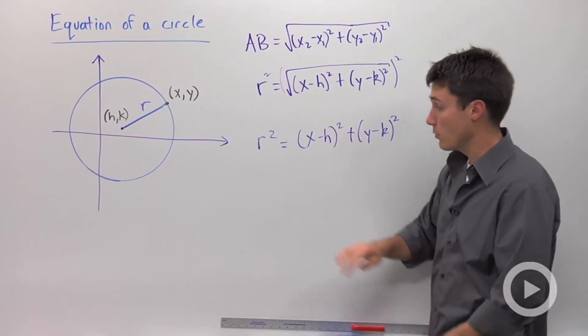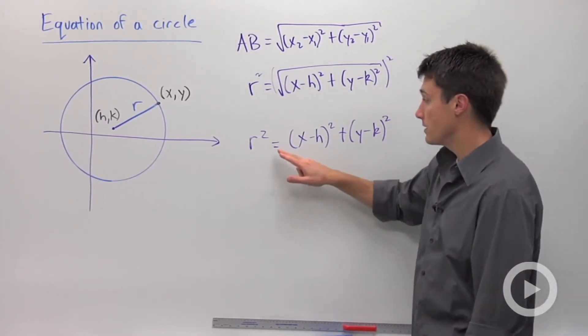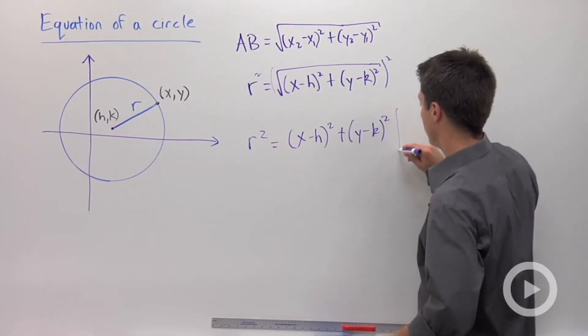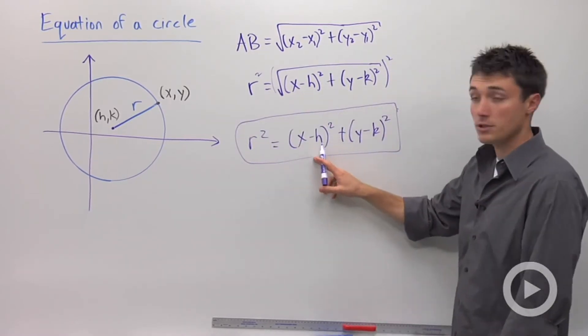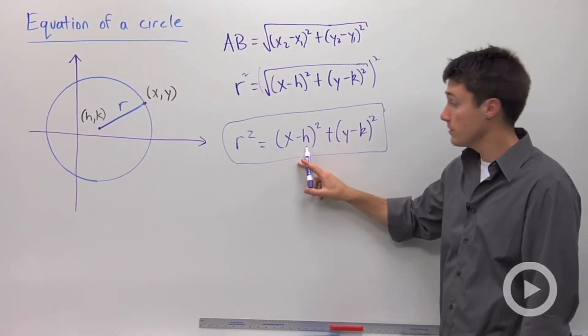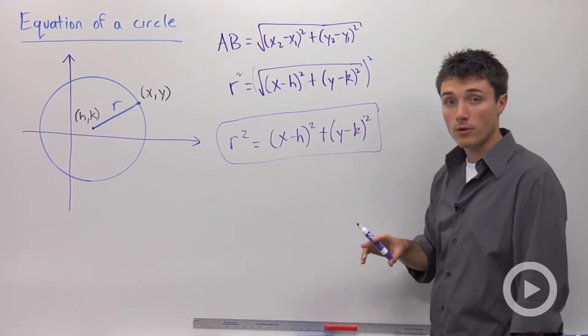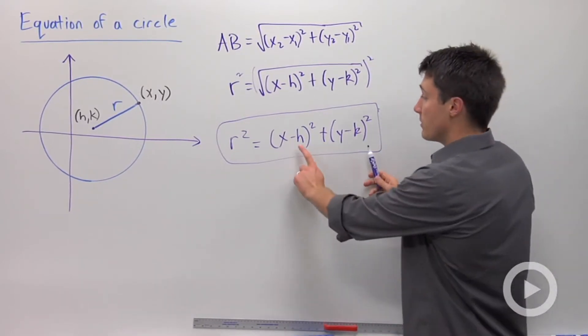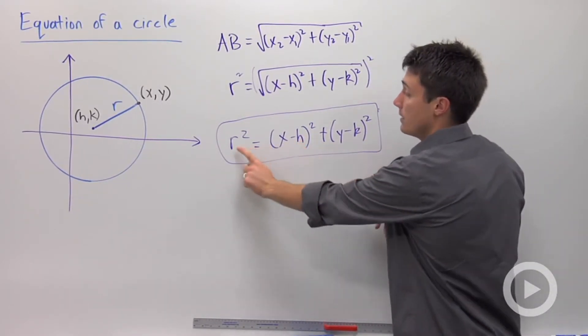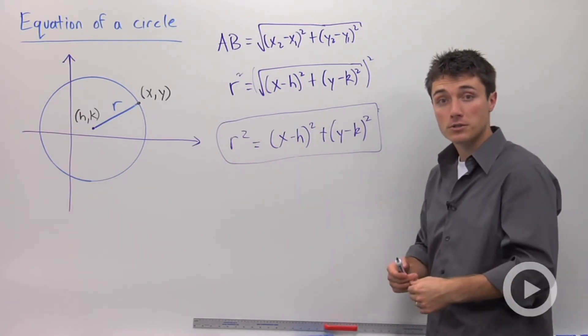So the equation of a circle with radius r is this equation right here, where h is the x-coordinate of your center and k is your y-coordinate of your center. So you're going to be substituting in for h, k, and for r, and that will give you the equation of your circle.